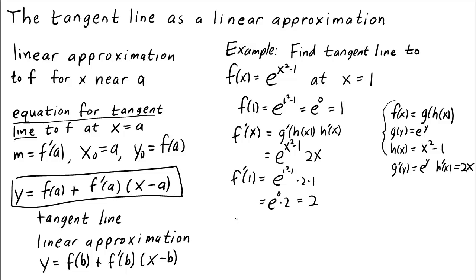Therefore the linear approximation, or equation for the tangent line, at x equals 1 is: y equals f of 1 plus f prime of 1 times x minus 1, which is y equals 1 plus 2 times x minus 1. You could multiply that out if you like. And of course we would get a different linear approximation at a different point.